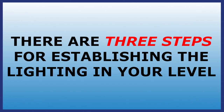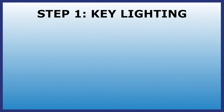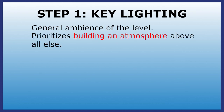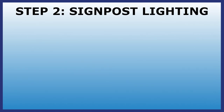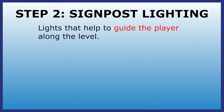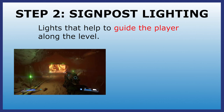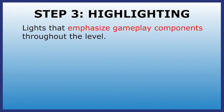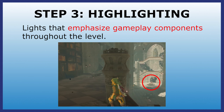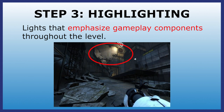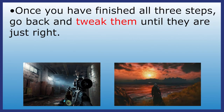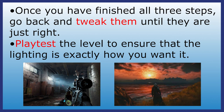You should set up the lighting in your level in three steps. Step one: key lighting. This is where you'll set up the general ambience of your level, and it's mostly to establish an atmosphere more than anything. This includes stuff like skyboxes and ambient lighting. Step two: signpost lighting. These are lights that are used to guide players along the level's critical path. Examples include lights that come from doors or from the end of a dark tunnel. Step three: highlighting. These lights are used to emphasize different gameplay components of the level to make them stand out to the player — for example, to highlight a group of enemies from a distance, or show off areas that can be explored. Once this is done, you can start tweaking the lighting so that it looks just right. Playtest the level as you go along, and once that's finished, you should be good to go.